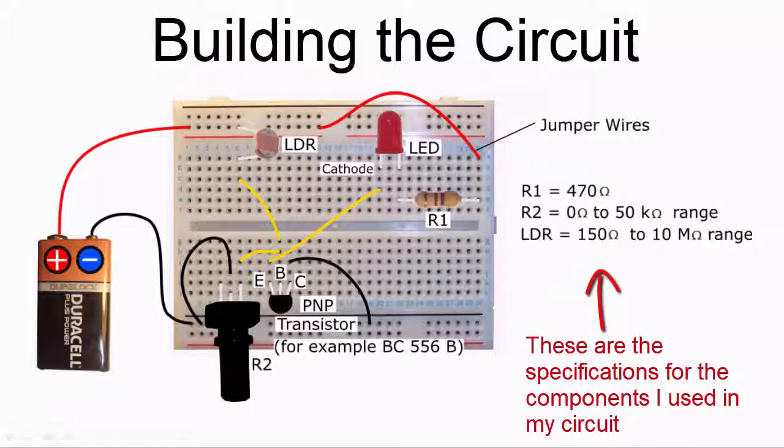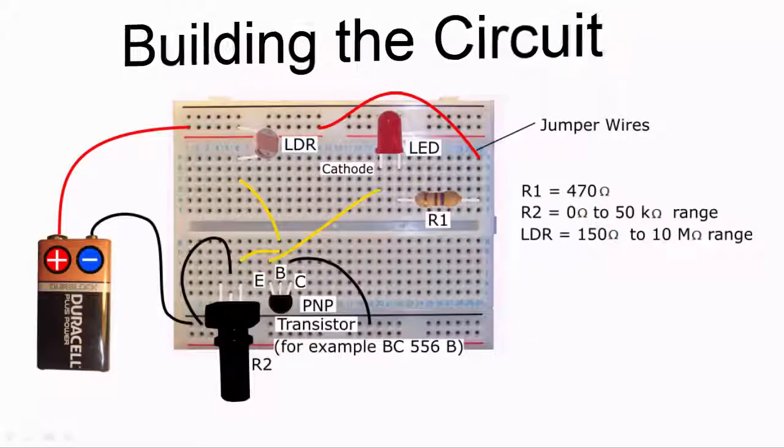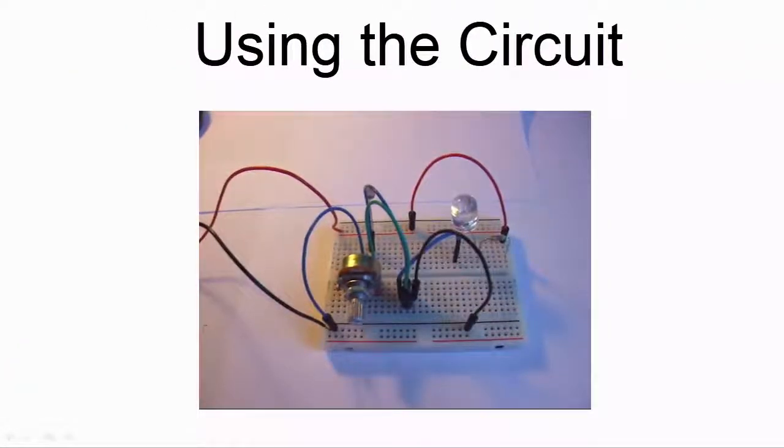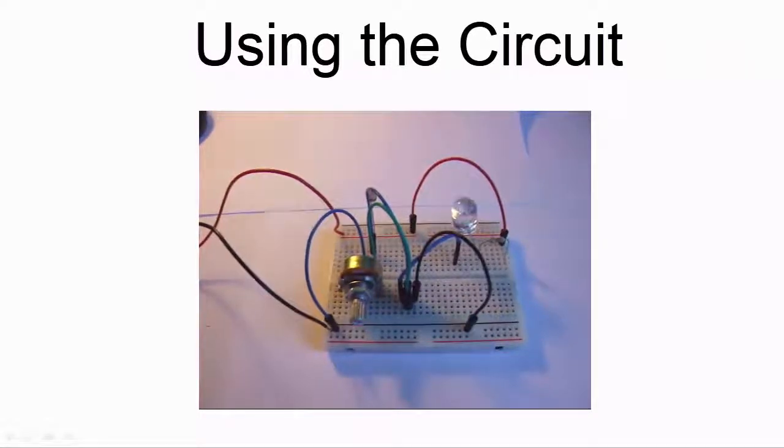When you switch on the circuit, it's quite possible that the LED will not be illuminated. Assuming you have built the circuit correctly, this is correct behavior. If you now cover the LDR with your fingers to simulate darkness, the LED should become illuminated.